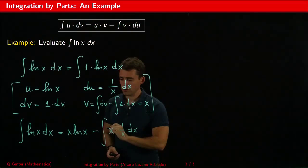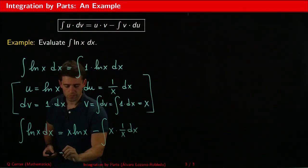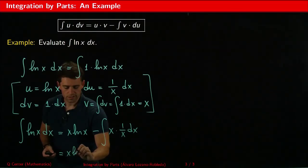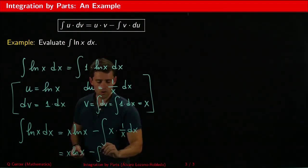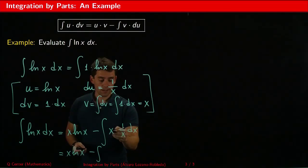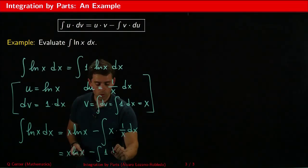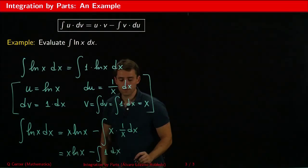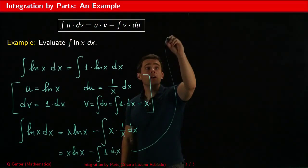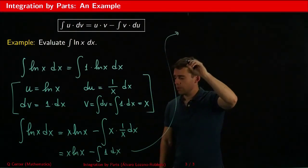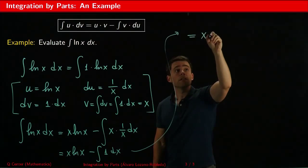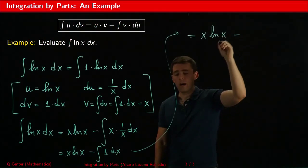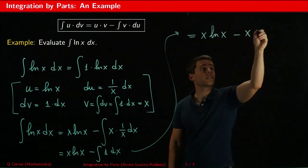So that works great because if we simplify this is x ln x minus the integral of x over x cancel out and I just have again 1 dx. So if we continue here, this will be x ln x minus the integral of 1 that is x plus constants.